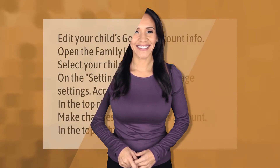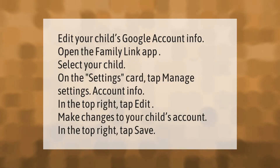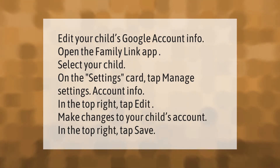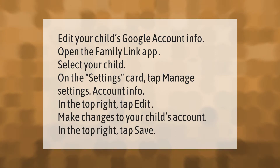To edit your child's Google account info, open the Family Link app and select your child. On the Settings card, tap Manage Settings, then Account Info. In the top right, tap Edit, make changes to your child's account, then tap Save.